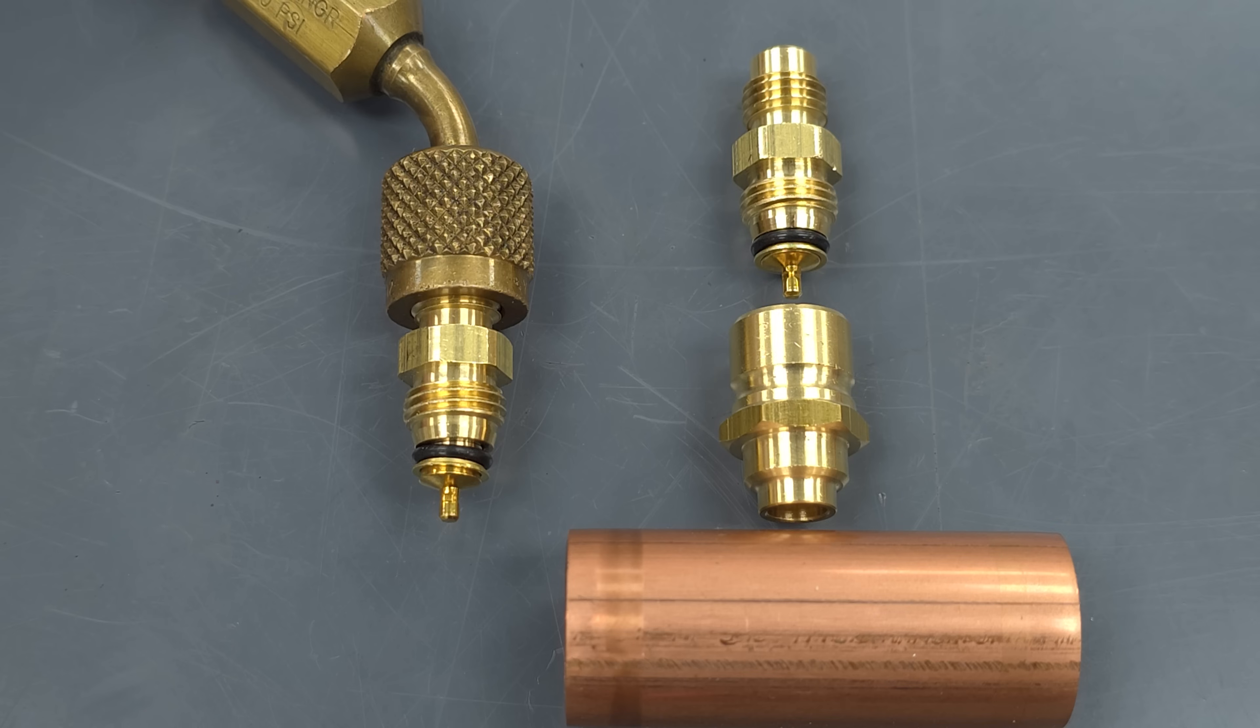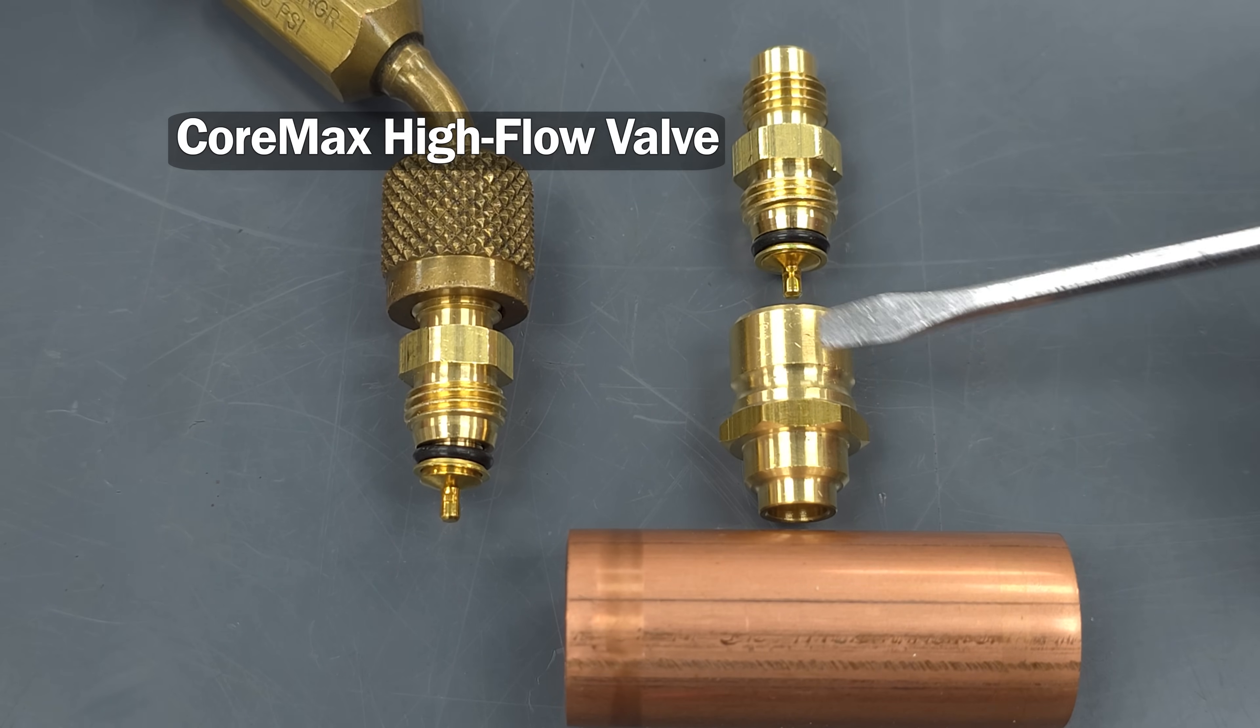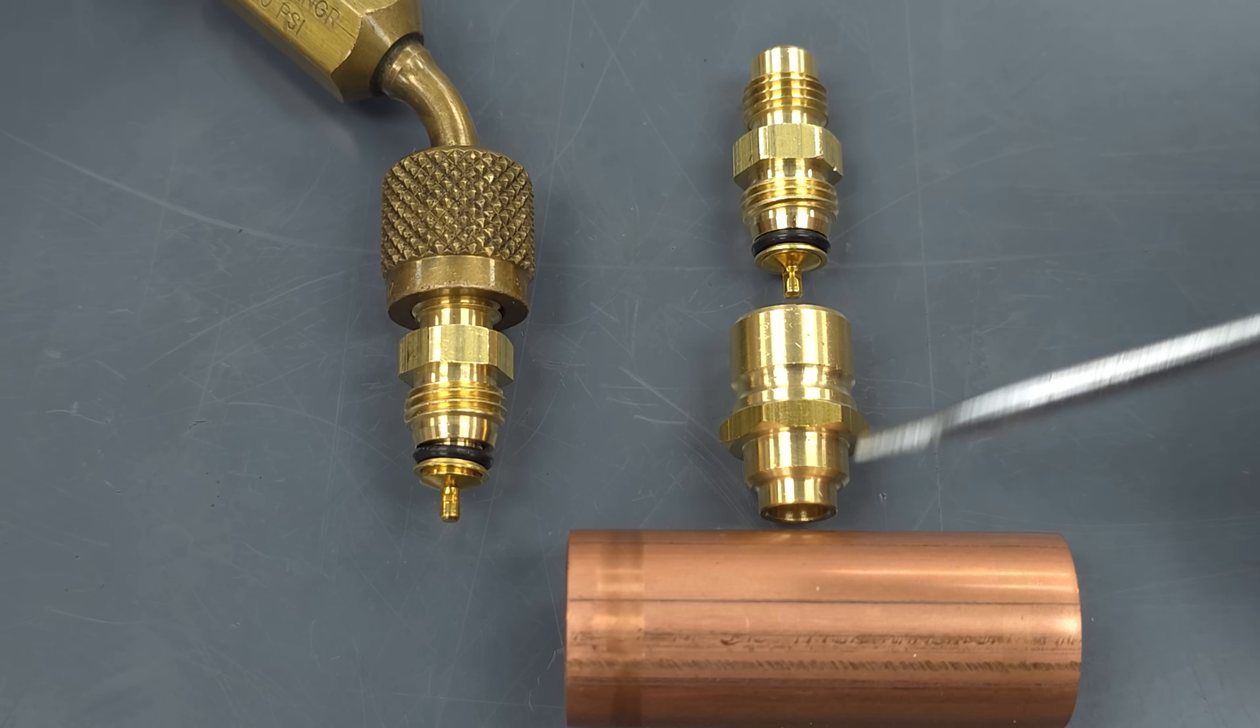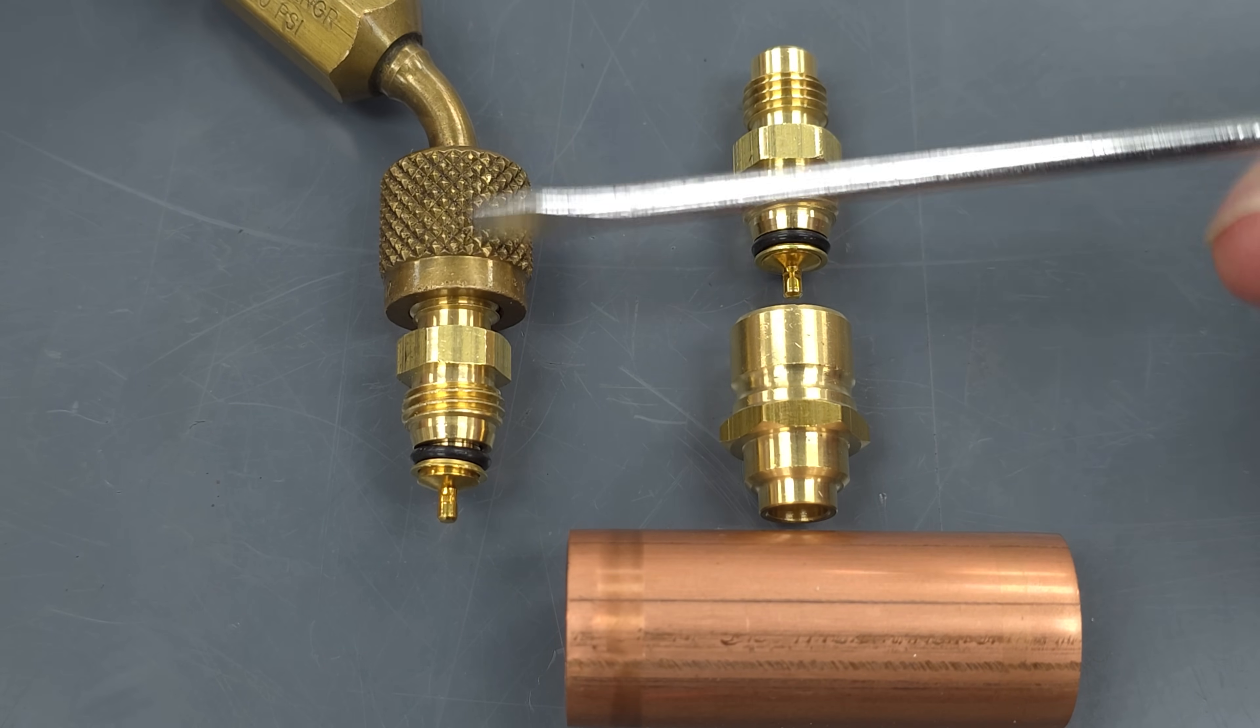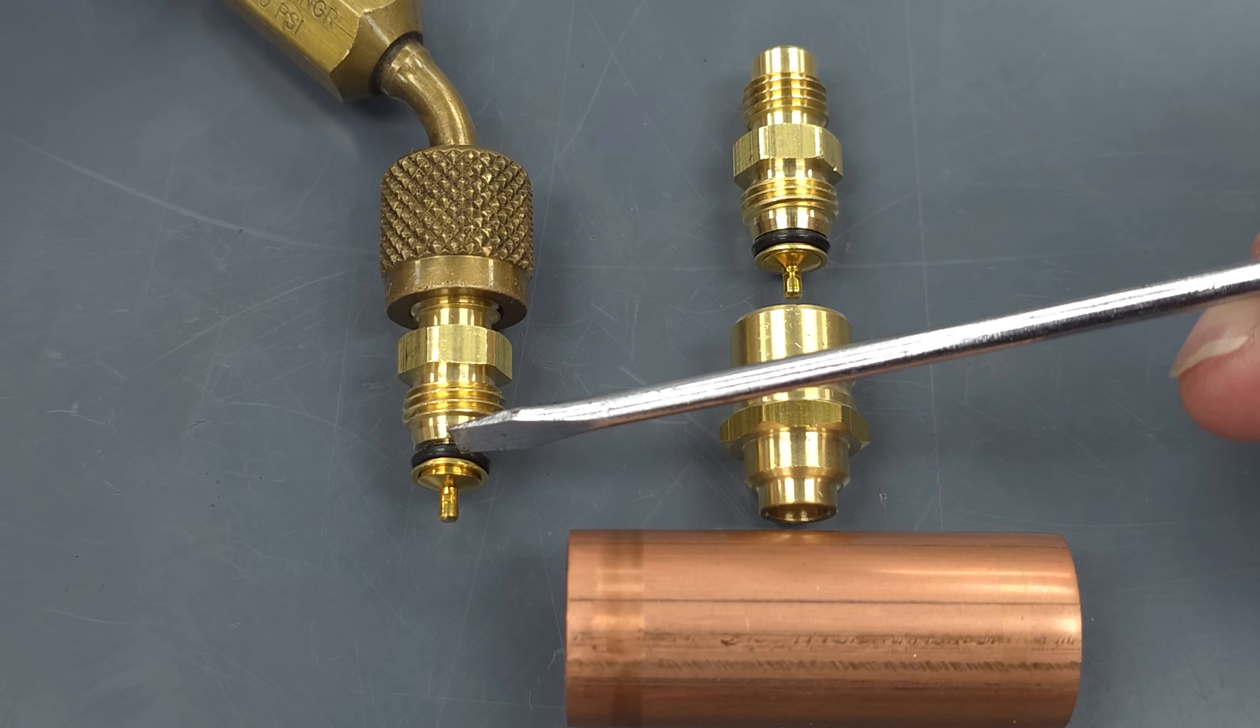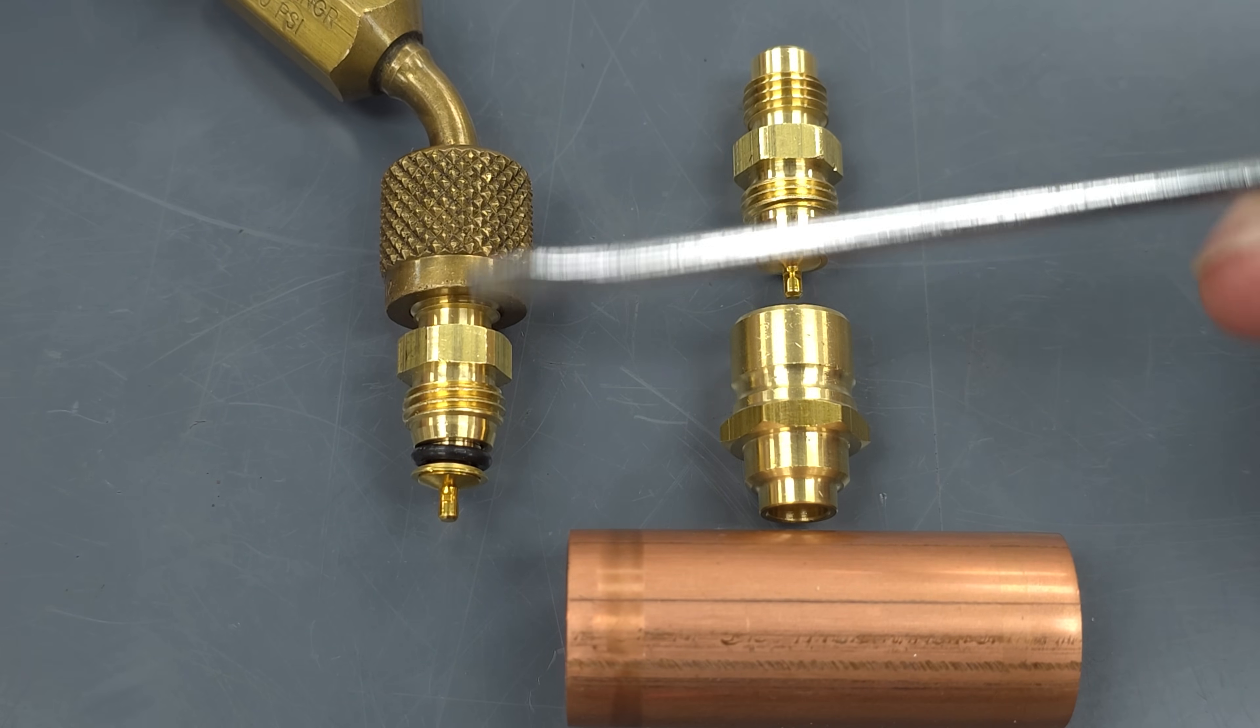And so when you have a Cormax high flow valve mounted into a Cormax C and that's either brazed or silver soldered into a pipe you're just going to have your hose end pushing in on the valve core depressor in order to do a recovery or a vacuum. So there's nothing to remove on the inside.